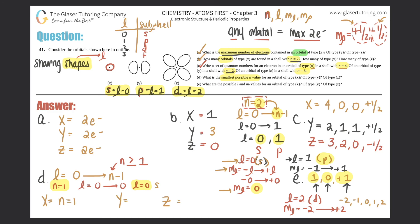For type y (l=1, p orbital): l=1 first appears when n=2, since n=2 gives l from 0 to 1. So the smallest n for type y is n=2. For type z (l=2, d orbital): l=2 first appears when n=3, since n=3 gives l from 0 to 2. So the smallest n for type z is n=3. Summary: x→n=1, y→n=2, z→n=3.